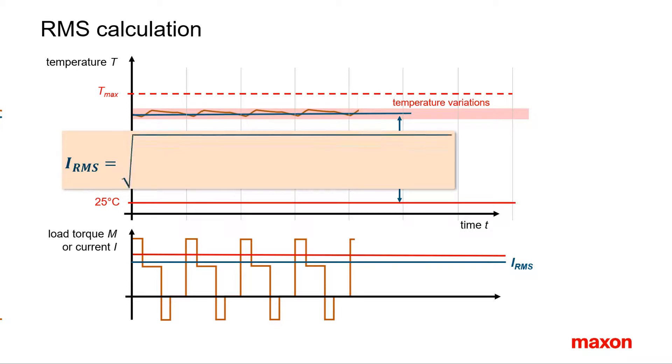Take the square root of the mean value of the time-weighted current squared. That's the meaning of root mean square.